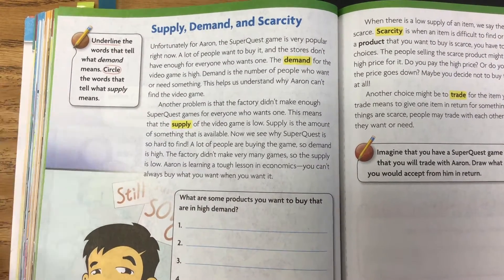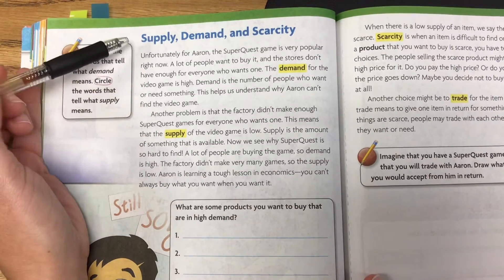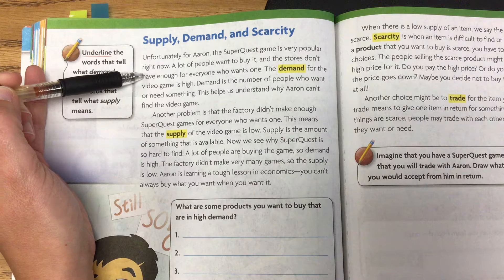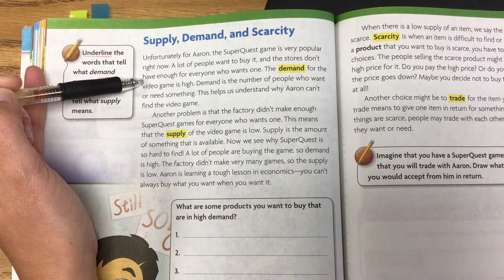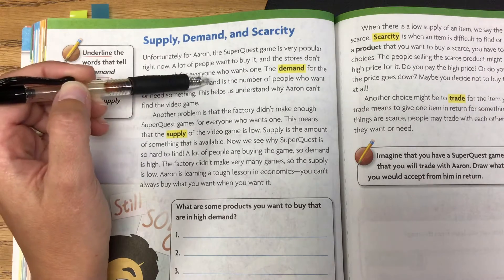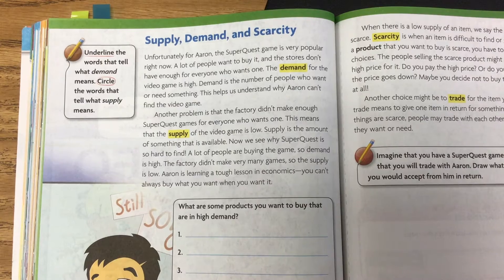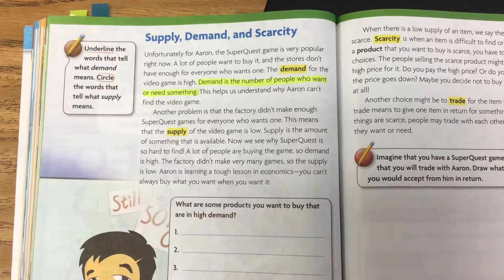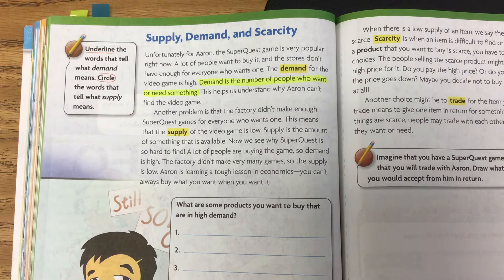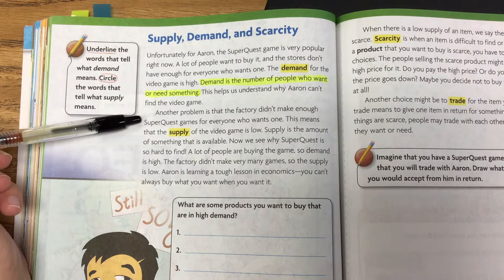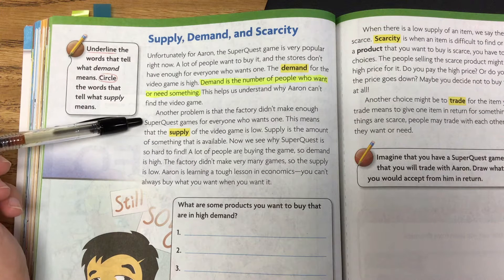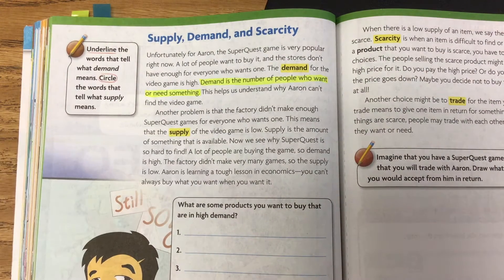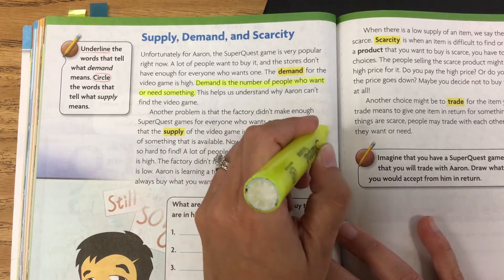Supply, demand, and scarcity. Unfortunately for Aaron, the SuperQuest game is very popular right now. A lot of people want to buy it and the stores don't have enough for everyone who wants it. The demand for the video game is high. Demand is the number of people who want or need something. Go ahead and highlight that definition of demand. Another problem is that the factory didn't make enough SuperQuest games for everyone who wants one. This means that the supply of the video game is low. Supply is the amount of something that is available. Go ahead and highlight that definition as well.